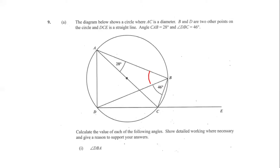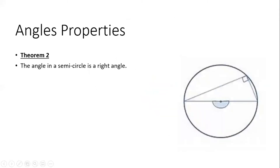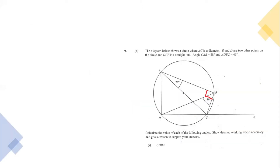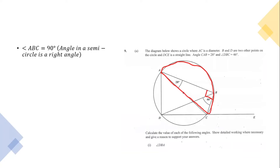Part one asks us to calculate angle DBA — that's this angle here marked in red. From the circle theorems and angle properties, we know that the angle in a semicircle is a right angle. Looking back at our diagram, we're looking at this half of the circle — the semicircle — in which angle ABC sits. So the angle in a semicircle is 90 degrees.